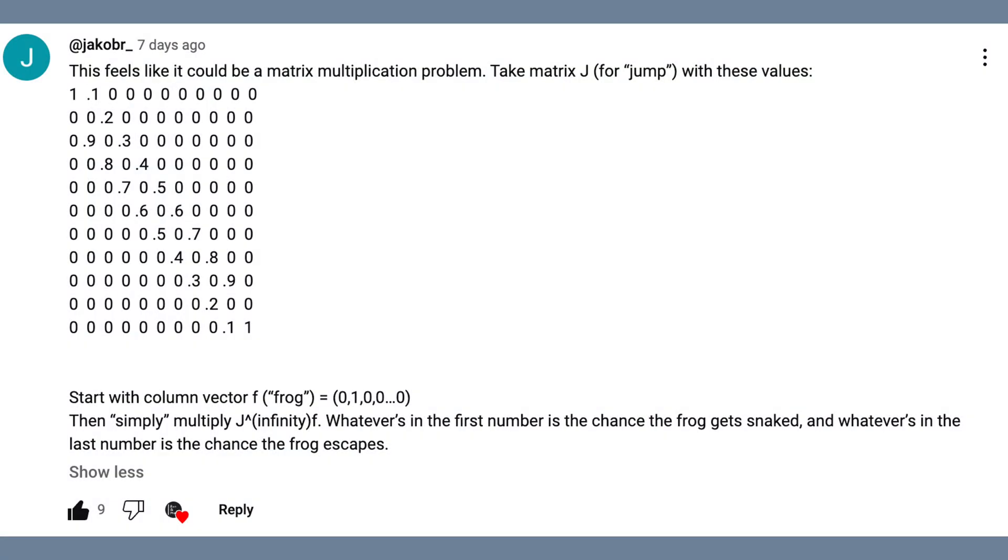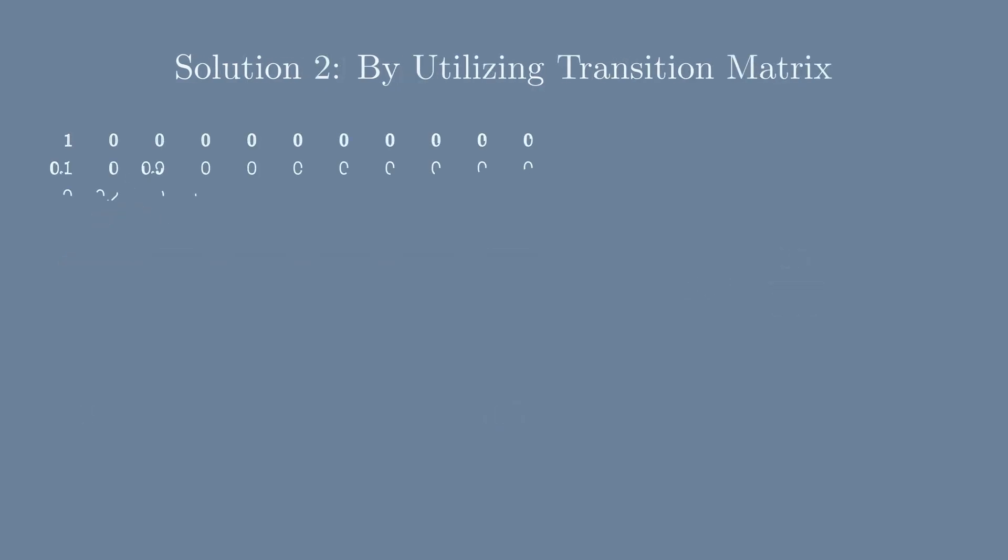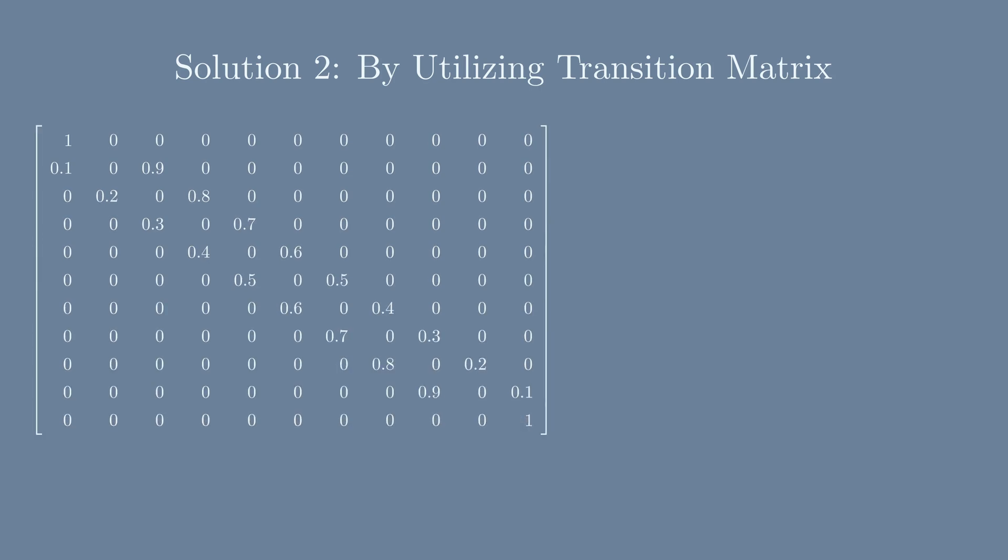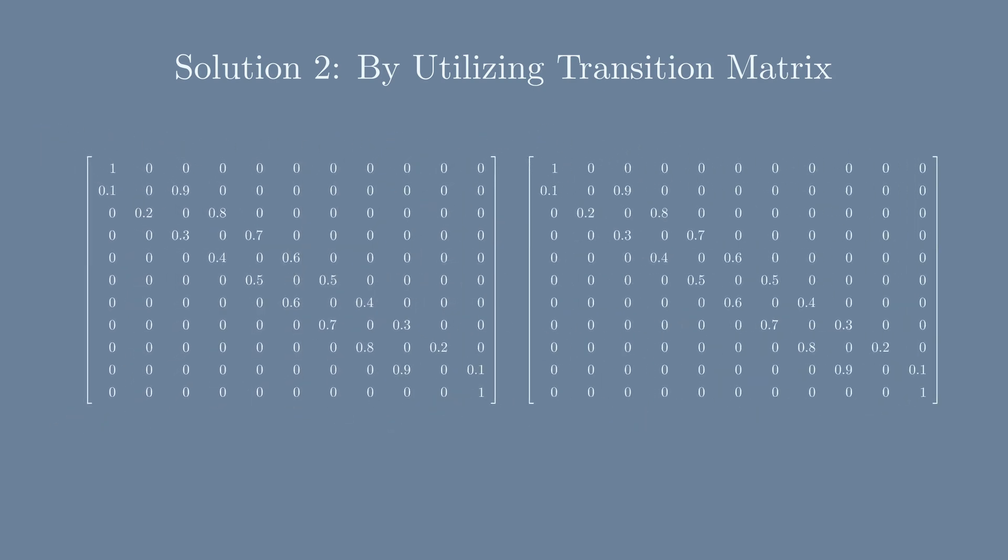The second solution utilizes the so-called transition matrix. A transition matrix is a matrix whose elements represent the probability of moving from one state to another, in our case moving from one lily pad to another. For example, the first row are all zeros except the first one, which means if the frog reaches the first lily pad it will remain in the stomach of the snake forever.